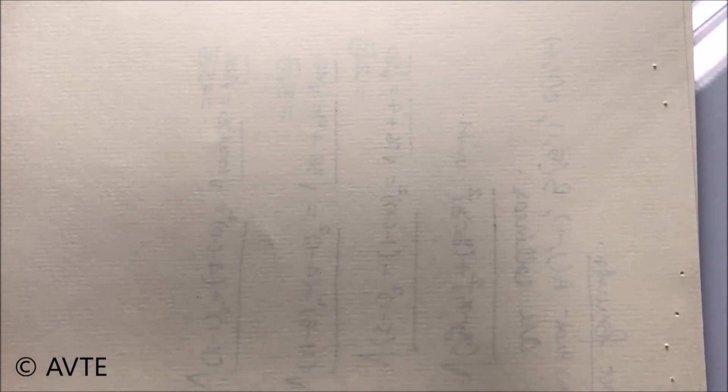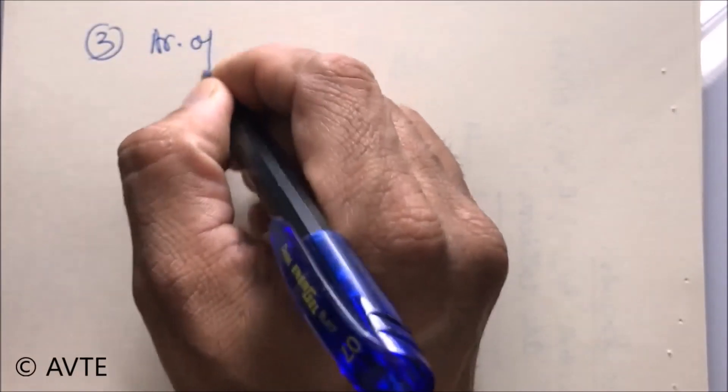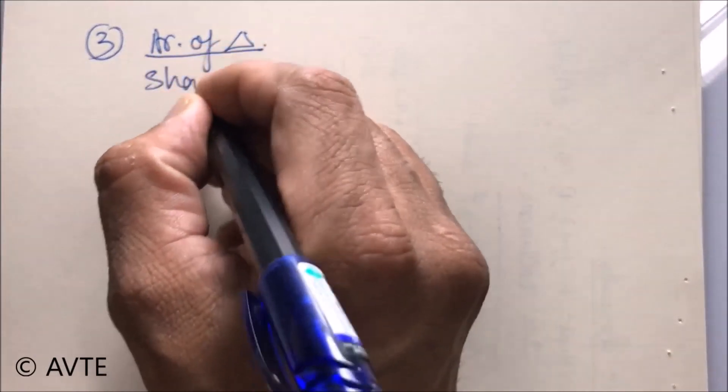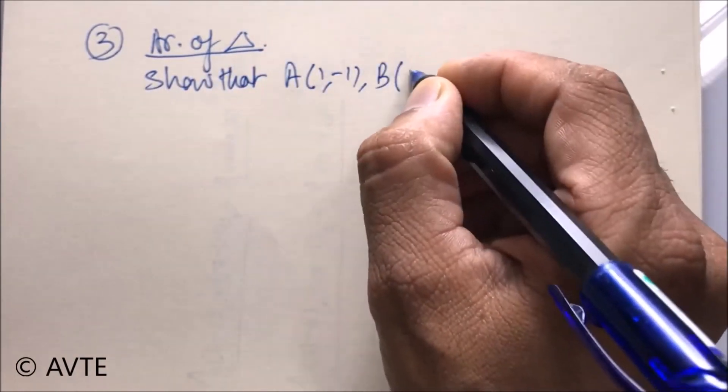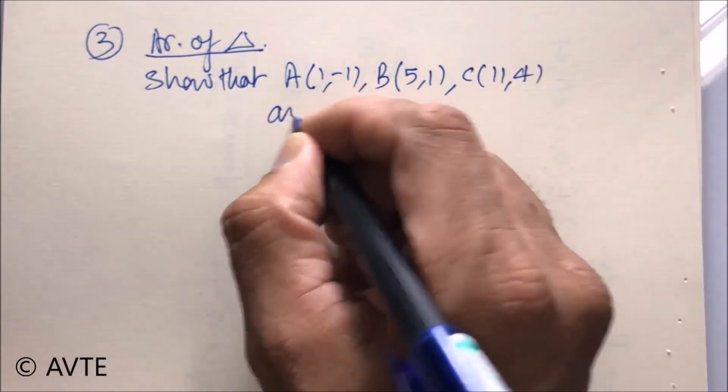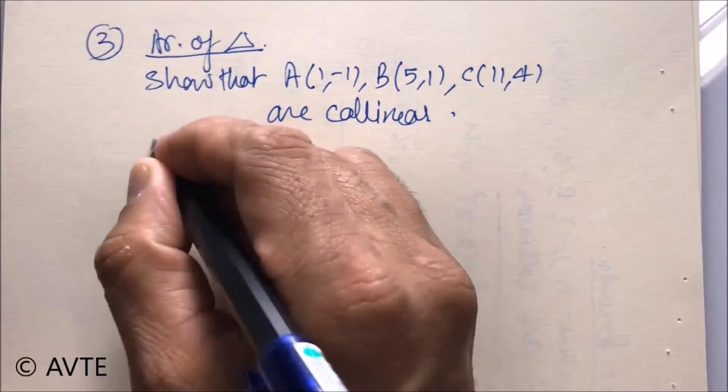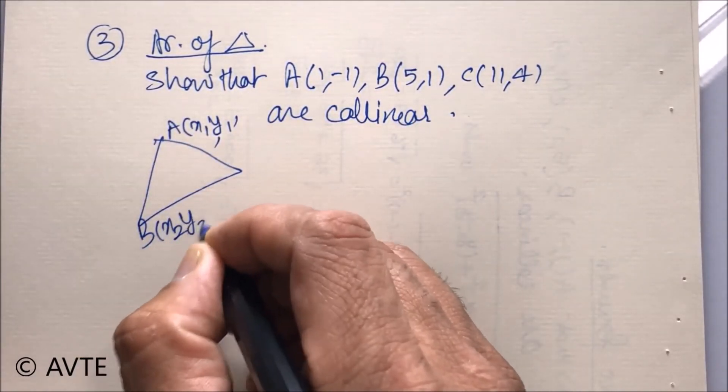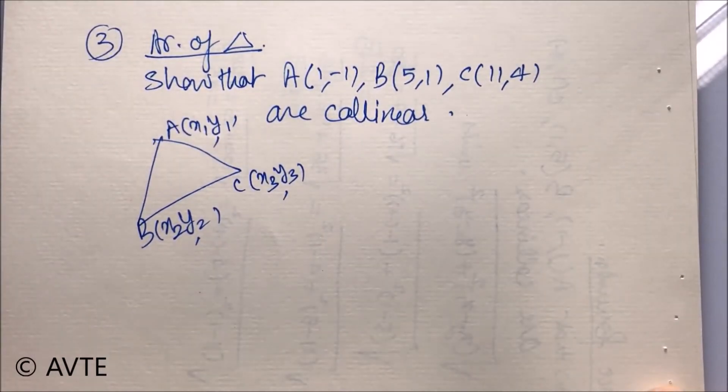Now, coming on to the third case area of the triangle. Using the same set of points. A quick revision for the area. If the vertices are x1, y1, x2, y2, x3, y3...